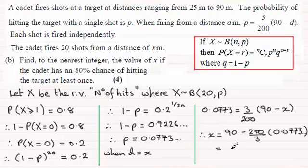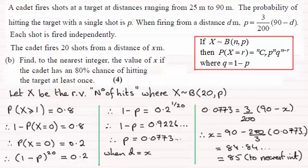You should find if you work that out you get 84.84 and so on. Now we're asked to give it to the nearest integer, so that's going to be 85. So I hope that's given you some idea how to go about that one if it caused any problems.